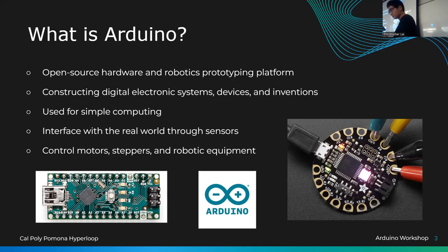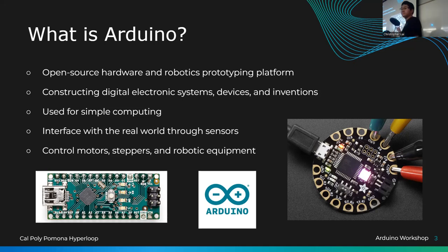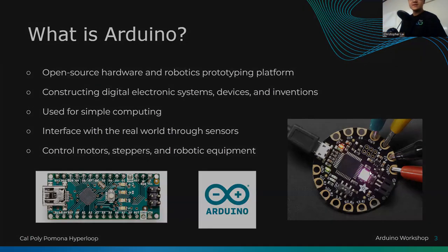Down here in the left corner is called the Arduino Nano. There are different types of Arduinos we'll talk about later, but this is probably one of the cheapest official boards you can get. That's the Arduino logo, and this is a really fancy circular board that Adafruit sells.